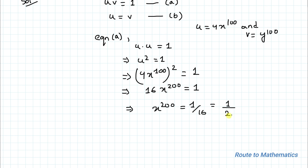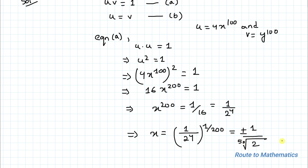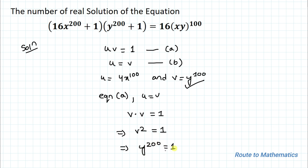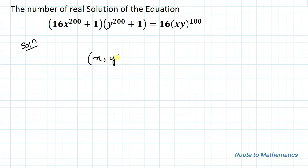We have x^200 = 1/16 = 1/2⁴, so x = ±(1/2)^(4/200) = ±(1/2)^(1/50), i.e., x = ±1/⁵⁰√2. From equation B, u = v, so v² = 1, meaning y^200 = 1, giving y = ±1. Thus the solutions are x = ±1/⁵⁰√2 and y = ±1.